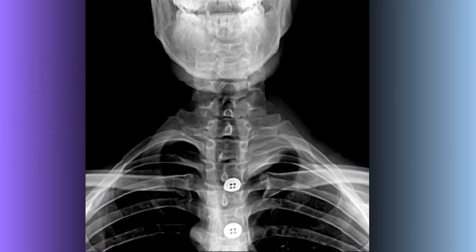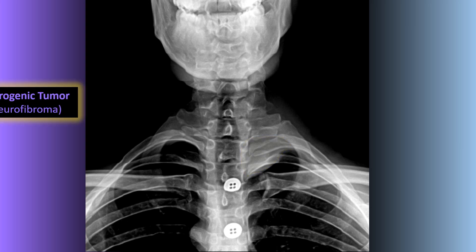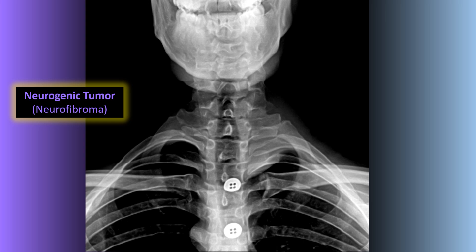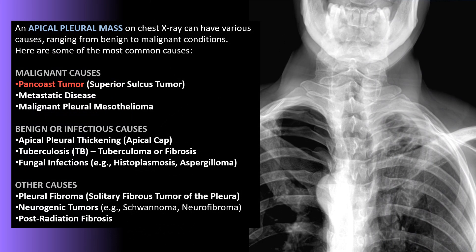On this frontal cervicothoracic view, there is a density within the right lung apex representing a space-occupying lesion, which ended up being a benign neurogenic tumor — also known as a neurofibroma or schwannoma. There are many different etiologies for apical pleural masses. Malignant causes include Pancoast tumors or metastatic disease. Benign causes include apical pleural thickening, and TB, which loves the right lung apex. Neurogenic tumors and post-radiation fibrosis can also cause these apical pleural masses.